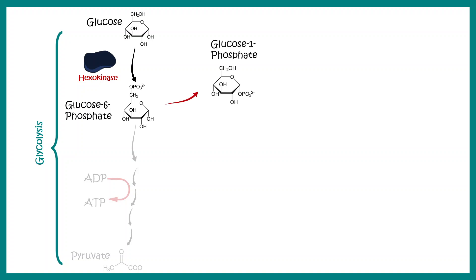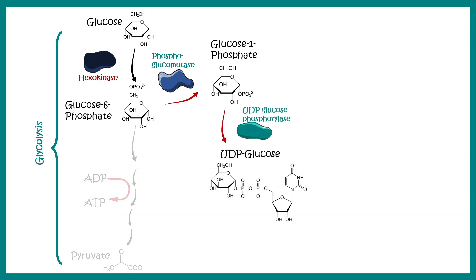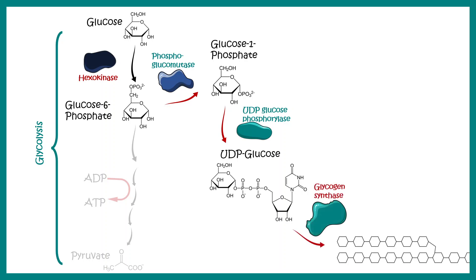Glucose-6-phosphate is converted to glucose-1-phosphate with the help of the enzyme phosphoglucomutase. Glucose-1-phosphate is then further converted into UDP-glucose, and this UDP-glucose can be attached to a growing glycogen chain with the help of the enzyme glycogen synthase.